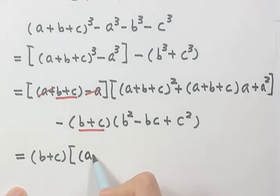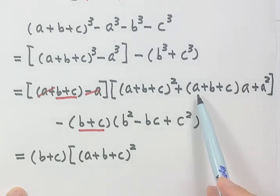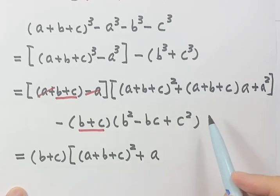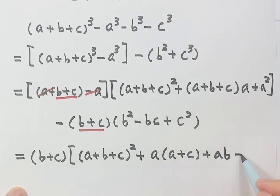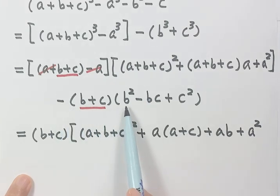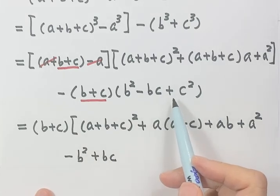Now let's write down the inside part. We are going to separate this one into two parts, then distribute a to them. So a plus c stay together, then times a. Then here we have a times a plus c, then a times b, then plus a squared. Now take out b plus c — we still have the negative sign, so distribute the negative sign to each of them. Then here we have just minus b squared, here plus bc, then minus c squared.